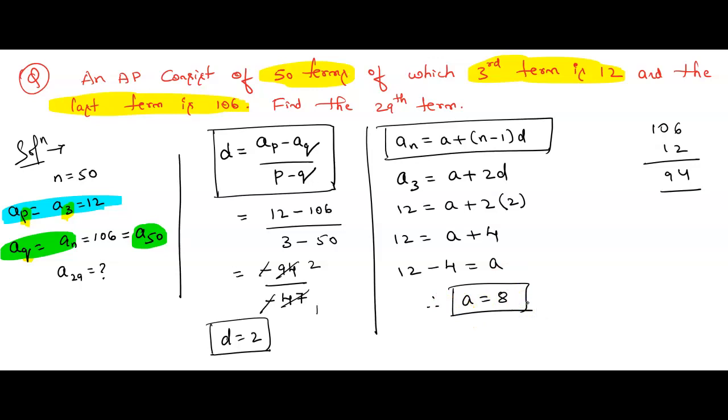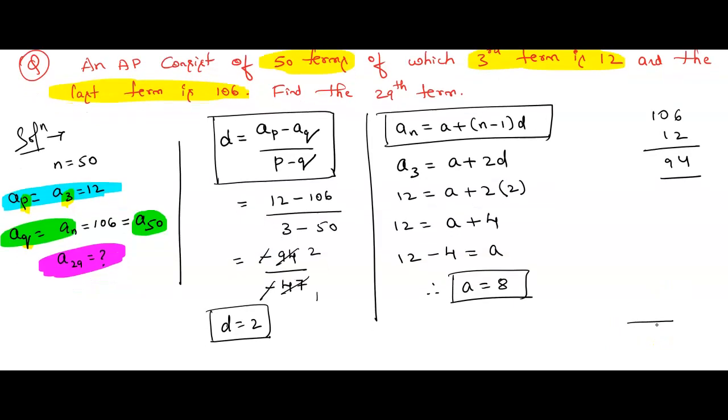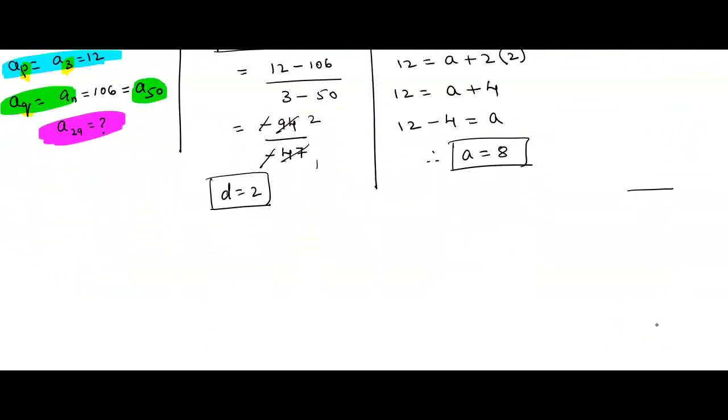We got the value of A and D. Now, come back to the problem, what we have to find? What is the question asked here? Find the 29th term. A₂₉, it is in the form of Aₙ. Therefore, Aₙ equals A plus (n-1) times D.